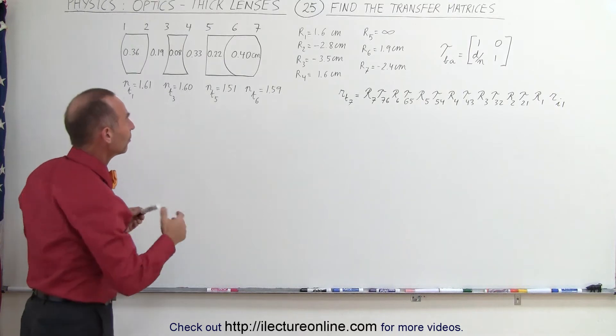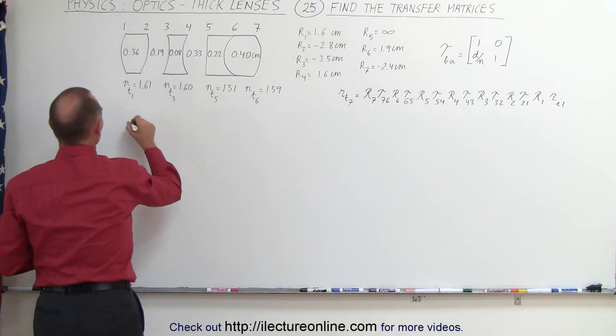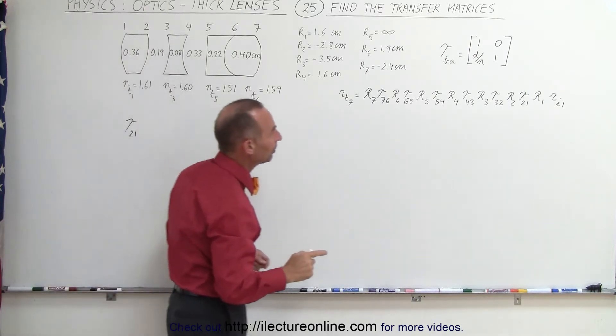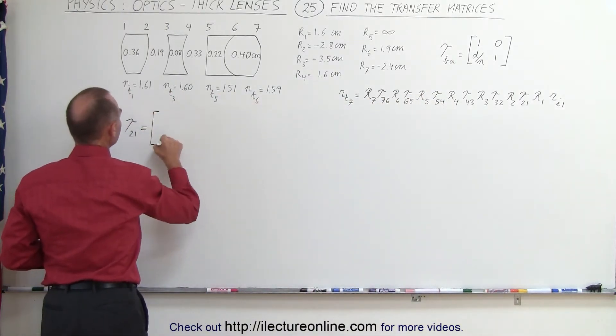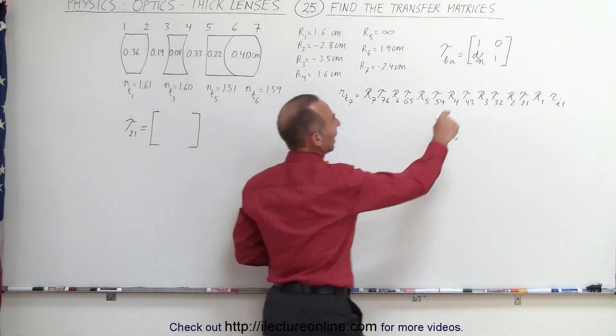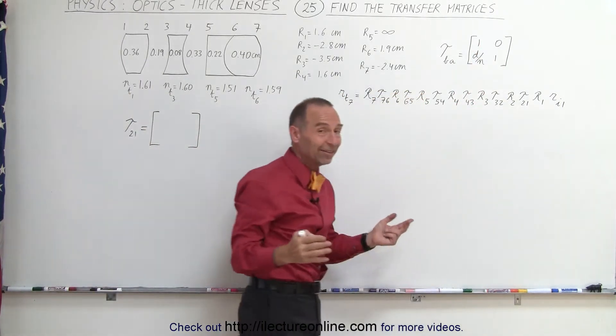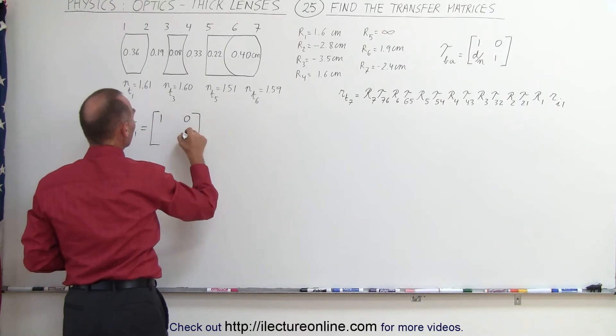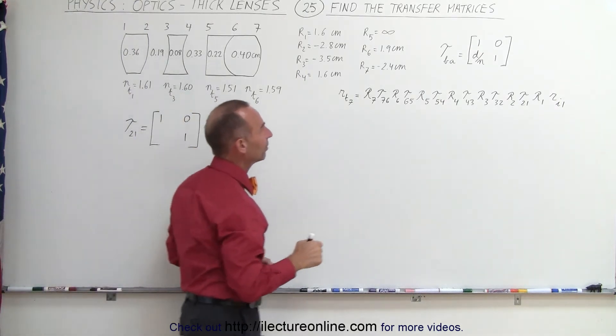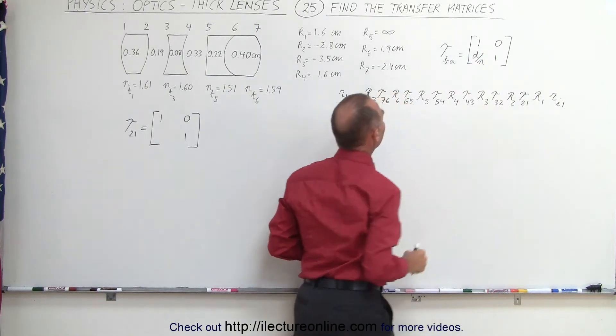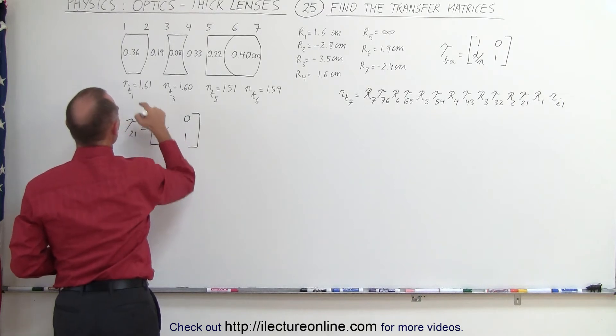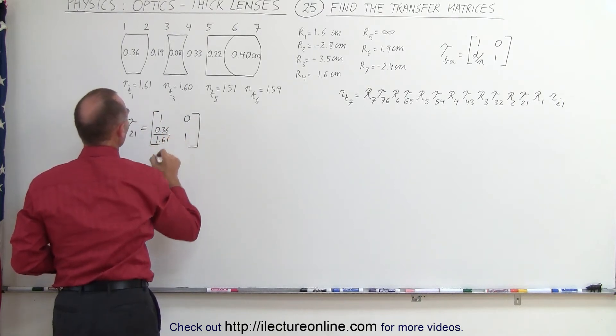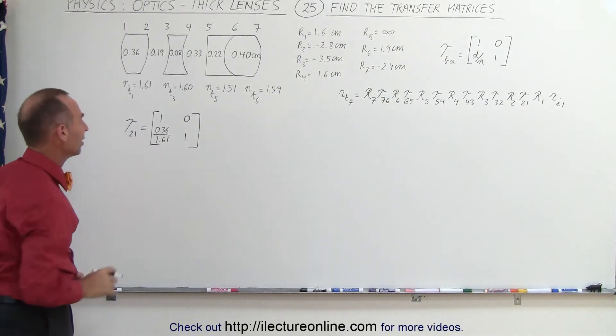So what are they equal to? Let's write them down. Starting with the first one, the transfer matrix number 1. So this is going from 2 to 1, and that's how we label them. Going from 2 to 1, we work backwards here. This is equal to, notice the three elements are easy. We have a 1, a 1, and a 0. So that's the easy part of the matrix. They're all 1, 0, and 1 here. And on this element right here, it's simply D divided by N. The thickness of that, which would be 0.36, divided by the index of refraction. In this case, it's 1.61. And then you'd have to work that out. We'll just leave it like this.